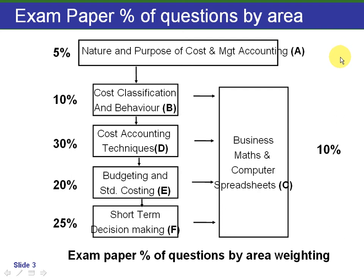You'll see from this diagram that the weighting of questions is 75% for the last three sections, which should indicate the amount of study time needed in those areas. I strongly recommend you look at the study guidelines on the ACCA syllabus guidelines for the paper and ensure your study covers them adequately.